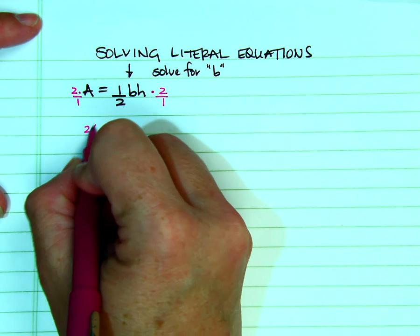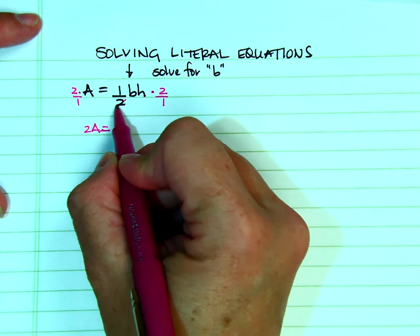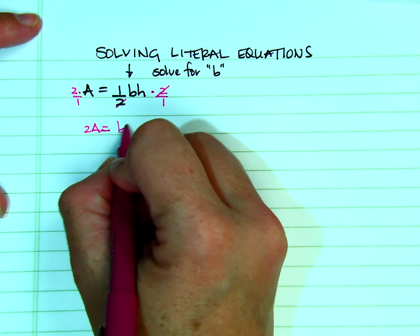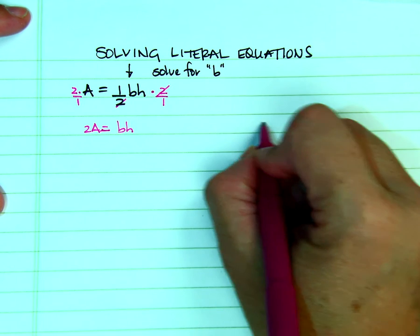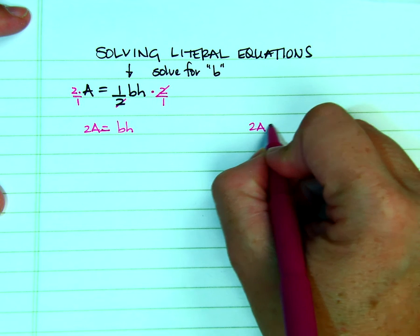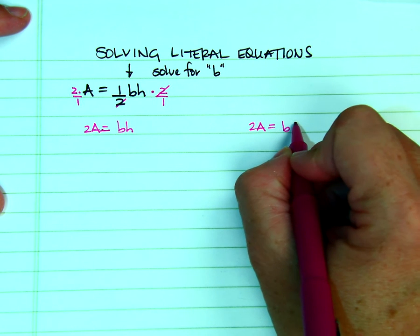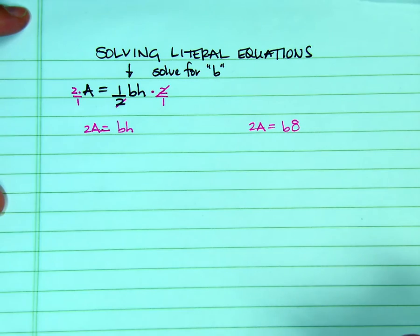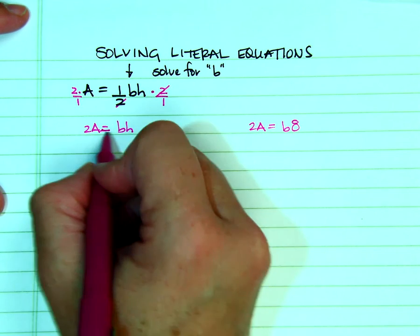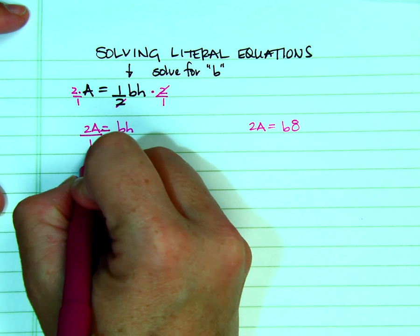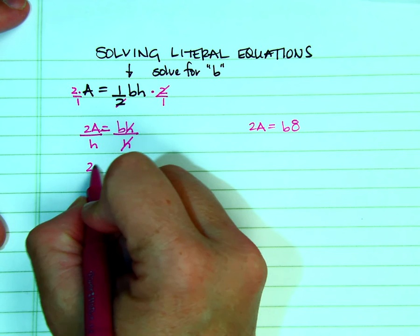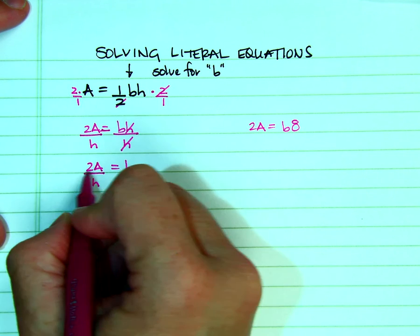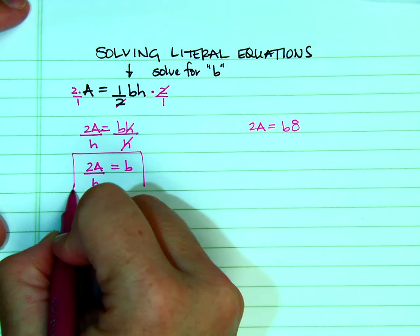And I am left with 2A equals, 2's are going to cancel, leaves me BH. Still solving for the B. If you are confused on what to do, think about if the H was an 8. You would have to divide both sides by 8. Well, we don't have an 8, we have an H. So we are going to divide both sides by H instead. So 2A over H equals B.